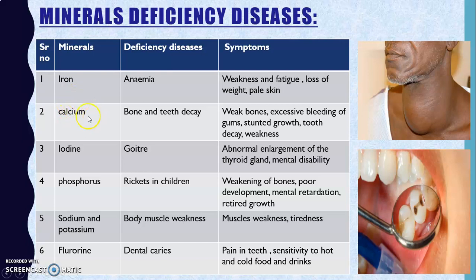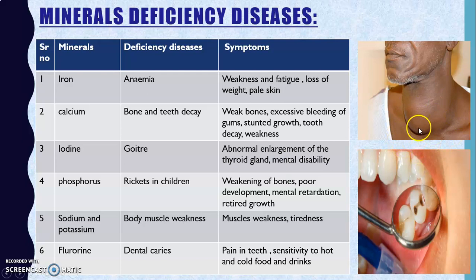Calcium is essential for bones and teeth and is obtained from milk. Calcium deficiency causes bone and teeth decay, weakness of bones, excessive bleeding of gums, stunted growth, and tooth decay. Iodine deficiency causes goiter — abnormal enlargement of the thyroid gland — and can also lead to mental disability.